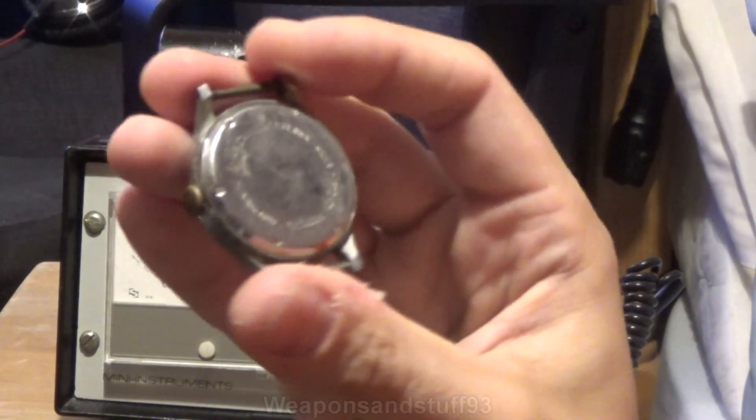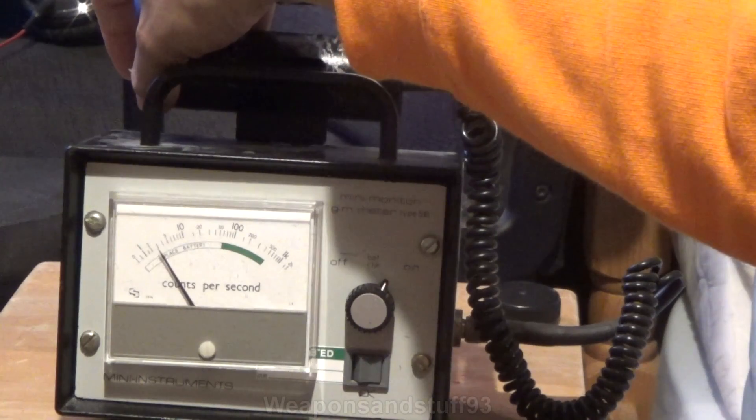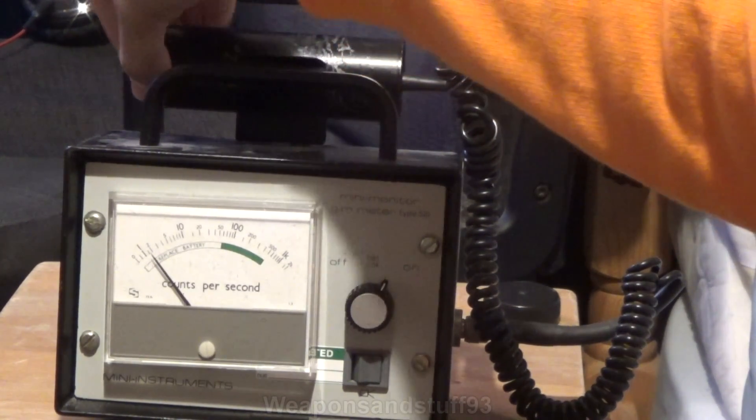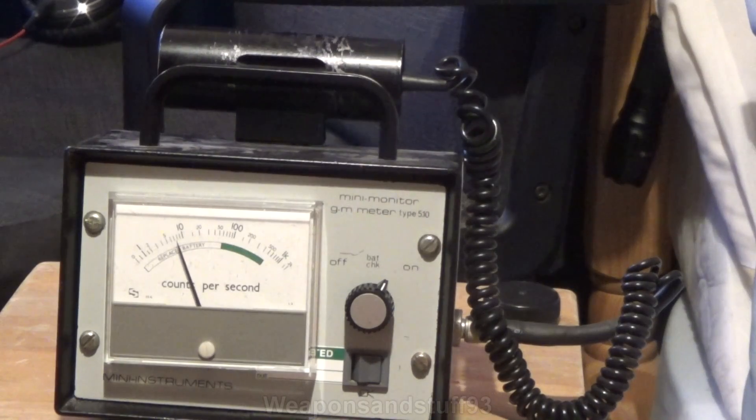Now, interestingly, because that's mostly alpha radiation, if we turn it around and use the back of the watch, you'll see that very little gamma radiation is actually getting through to the other side. But as soon as you flip it over, quite a high reading. So there's another watch dial.